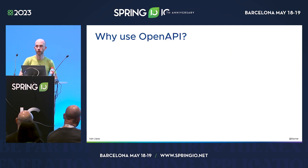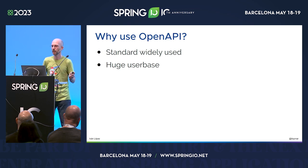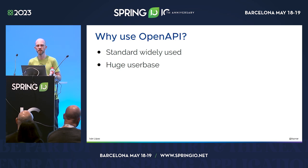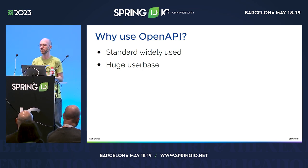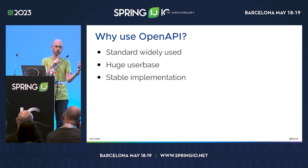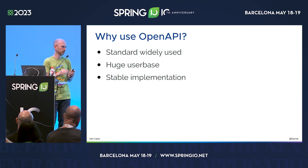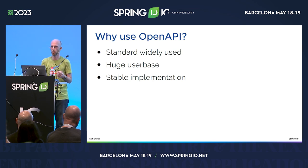So why should we care about or use OpenAPI? It's a standard that is widely used in a lot of different places, with a huge user base. It's made by many big companies, and a lot of products offer their specs as OpenAPI because it's the standard. It's stable — when they did the rebranding from Swagger to OpenAPI, they updated the version to 3.0, which is the current one. It's considered now stable and mature enough, and they don't change it too much, so we can rely on it for describing our APIs.